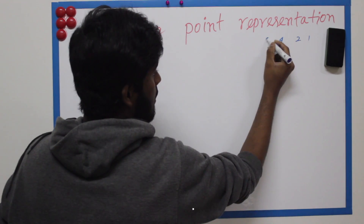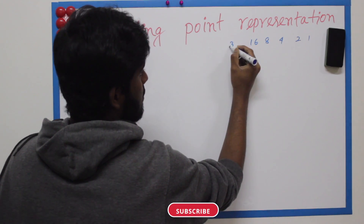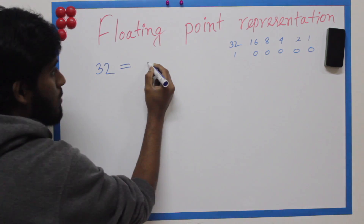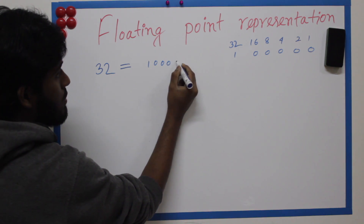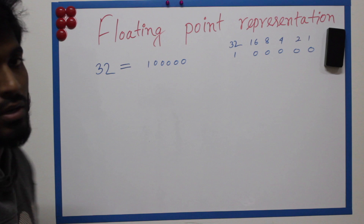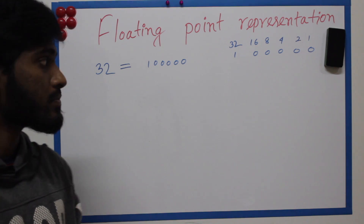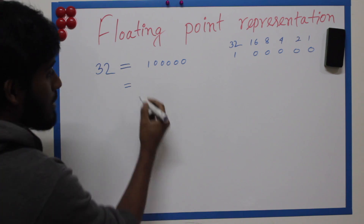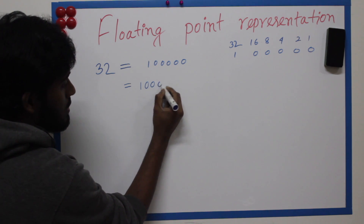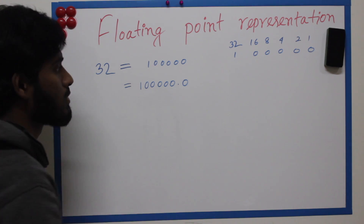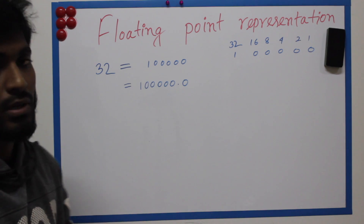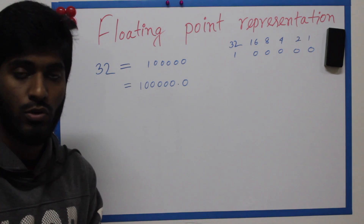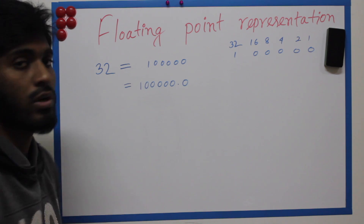So what do we have to do with 32? We convert: 1, 2, 4, 8, 16, 32 — that means 32 in binary is 1, 0, 0, 0, 0, 0. We have to find the 32 binary number. The answer is we have to represent it as a floating point number using the fraction 0.1.